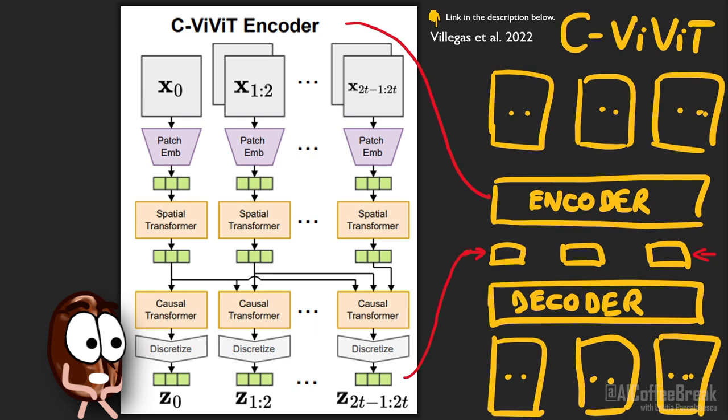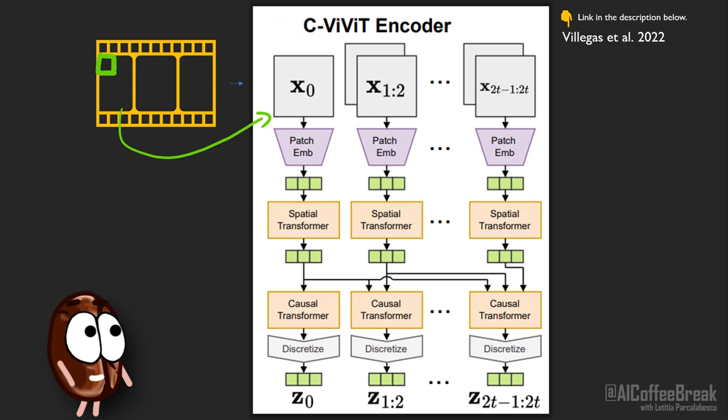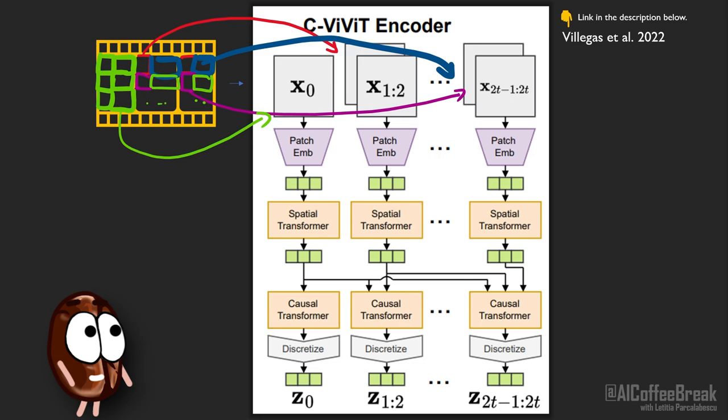In other words, they take the ViViT architecture from prior work and make it causal — so autoregressive — reconstructing video from left to right. The encoder takes in a sequence of video frames, so ordered images. It extracts patches from the first frame and video patches — stacks of patches at the same position through time — from the rest of the video.